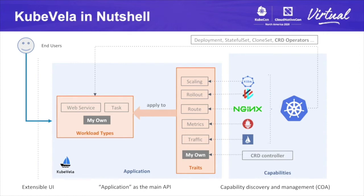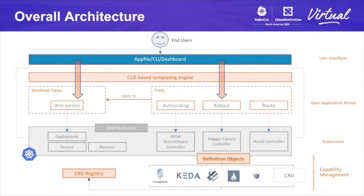This is a simplified diagram of KubeVela. From the user's perspective, it deals with workloads and traits through the UI. The UI consists of the CLI, the GUI, and AppFile — all of which are application-centric, meaning application is a first-class citizen and the main API entry point of KubeVela. Under the hood, we have capabilities from the community and the capability discovery and management system. Like any repository, we need to be able to manage our assets. This is the overall architecture of the KubeVela system, providing more comprehensive views of all the logical systems within it.